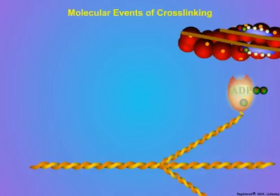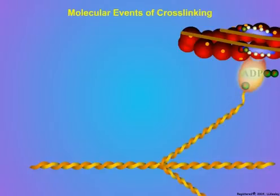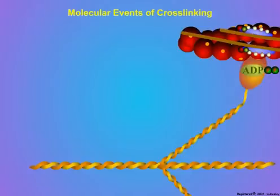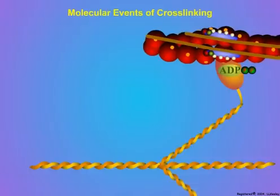To start the contraction cycle, the myosin head attaches loosely to actin, then releases the inorganic phosphate, which causes tight binding with the actin. After tight binding, proteins in the myosin head undergo a conformational change that results in repositioning the angle of attachment between the myosin head and the actin. The shift to the new conformation pulls the actin along the myosin.